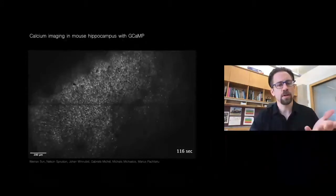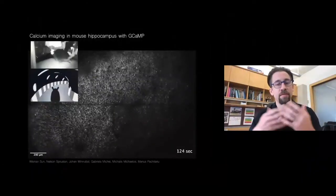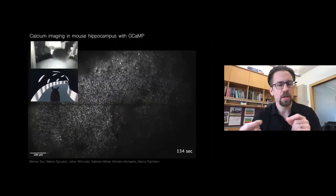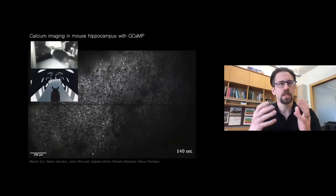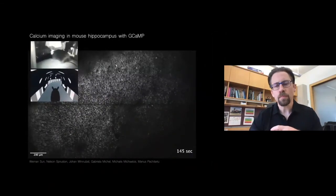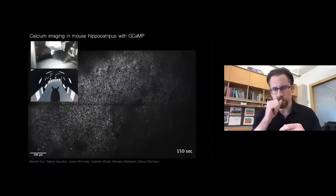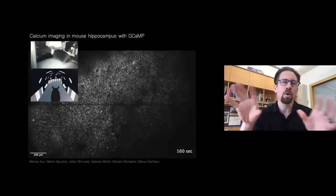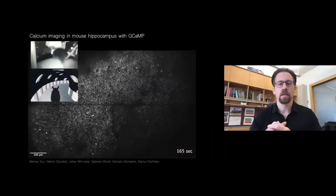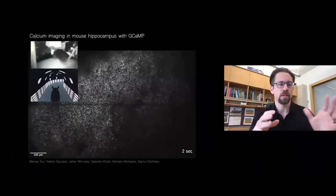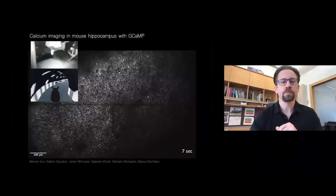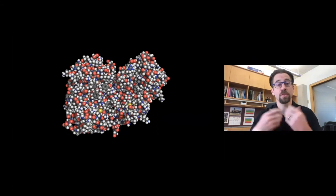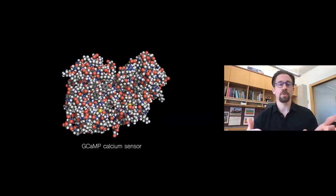Now it turns out that this mouse is running on a ball, navigating in virtual reality through a tunnel, looking for specific locations to get a reward, as you can see in these videos. So it's possible with these tools to study how the coordinated activity of many neurons drives these complex behaviors like you see in the video.